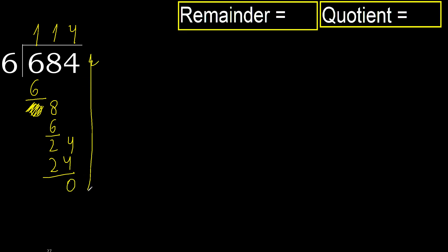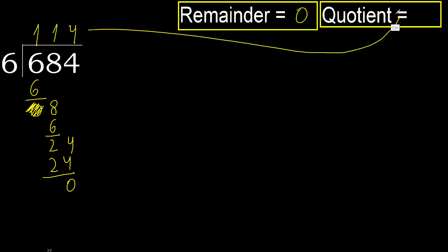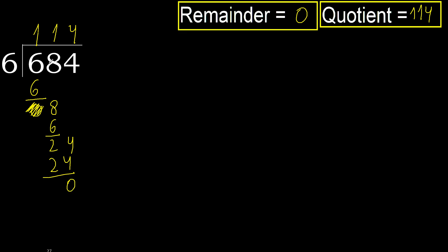There is no next number, therefore finish. Ok, 0 remainder. Therefore, 684 divided by 6 equals 114.